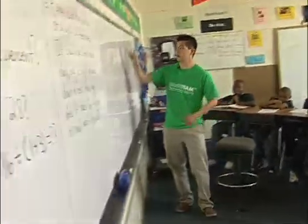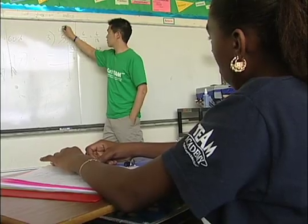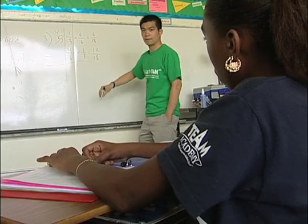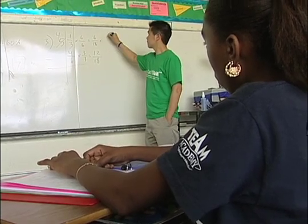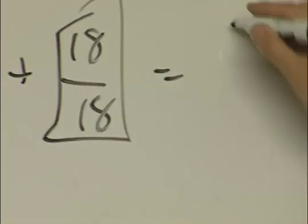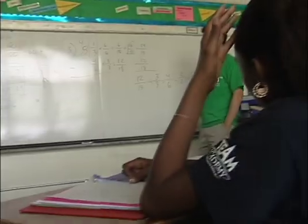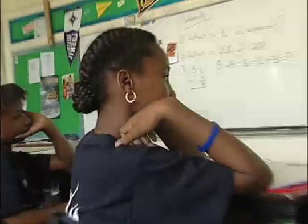Alright, moving on to number 3. We have 5 and 1 third. This is a throwback question minus the fraction 4 and 6. So Tajani is saying you can't subtract 12 from 6. We're going to borrow from the 5 and make it a 4. Then I add an 18 to 18. And what did you get? I got 24 over 18. So you got 4 and 2 thirds.